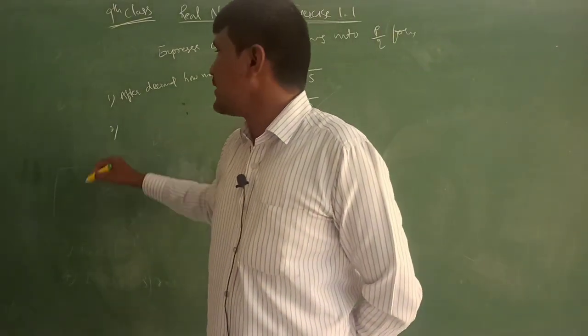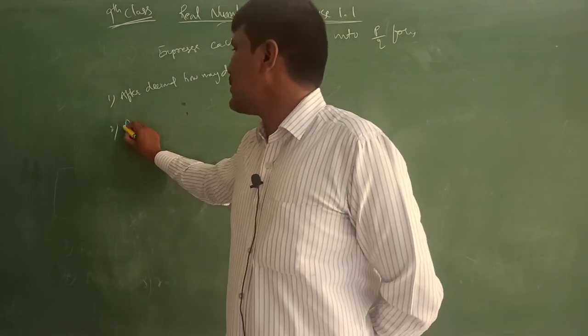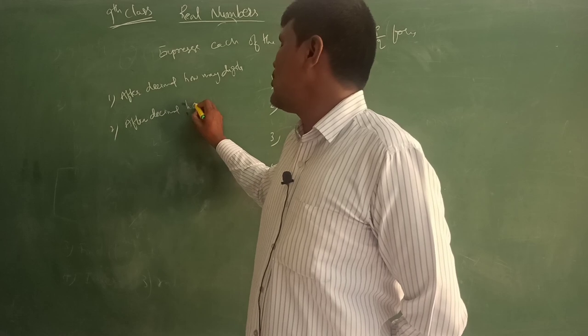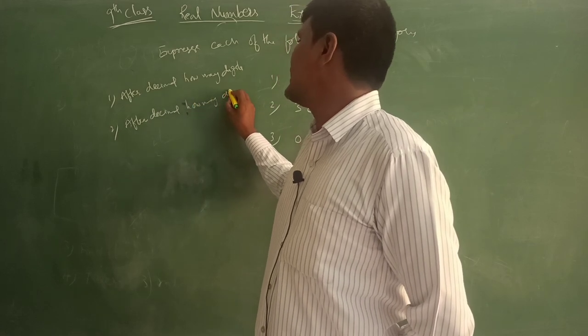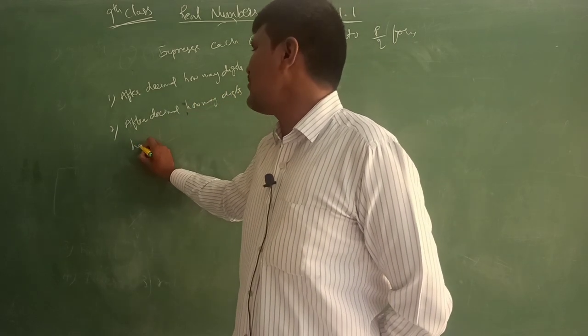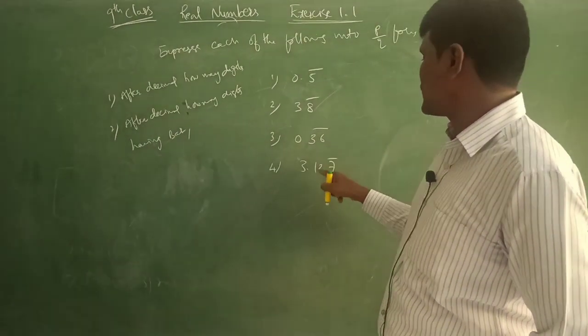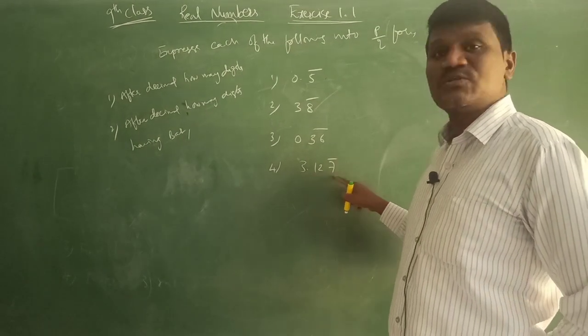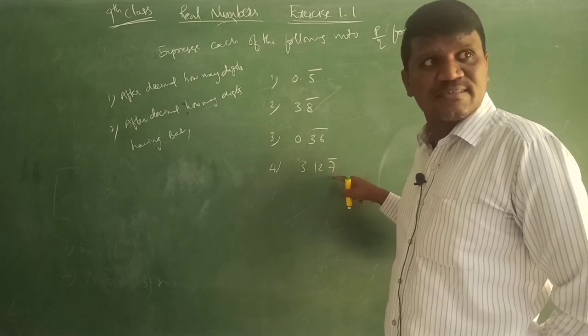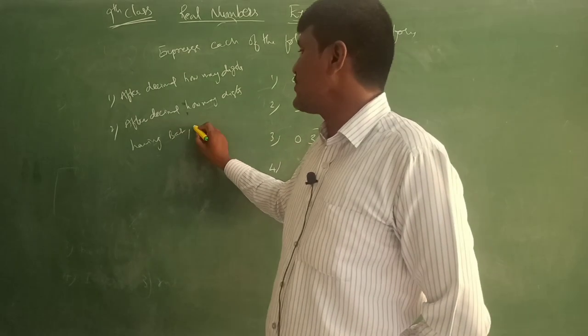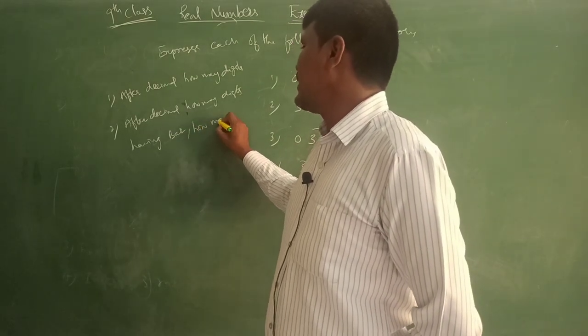Second point: after decimal, how many digits? How many digits having bar? Bar means like this - if the decimal has three digits, which digits have bar and which digits don't have bar. So how many digits having bar? How many not having bar?